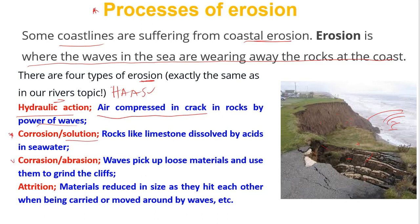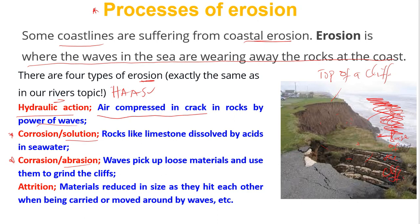Next is abrasion — when waves pick up loose materials and use them to grind the cliff face, like sandpaper on the cliff of the sea. Looking at this diagram: the incoming water at the base is where the cliff is attacked most. The top part is the cliff top, and the area the water attacks is the base of the cliff. Once the base is attacked, it causes an undercut, and then the top will collapse. The second A in HAAS stands for attrition — material reducing in size as pieces hit each other when being carried by the waves.